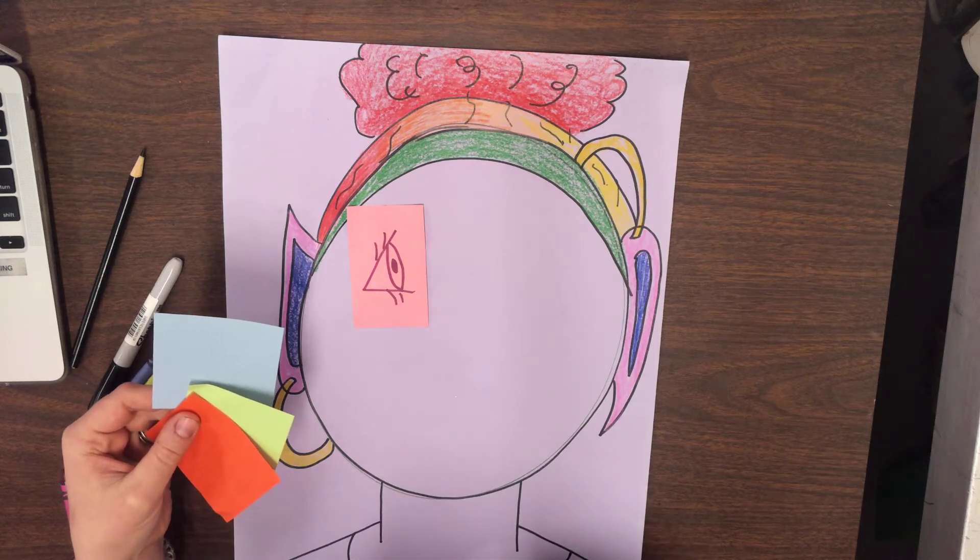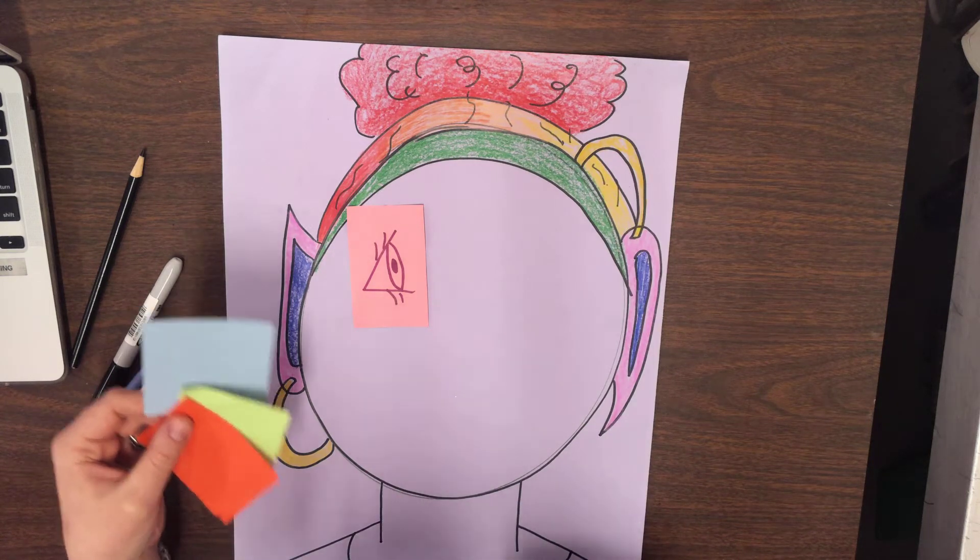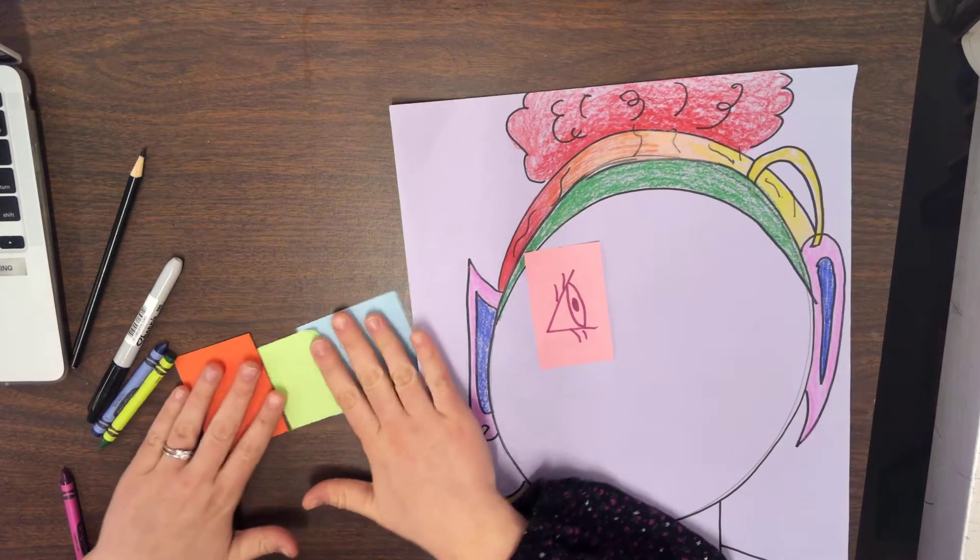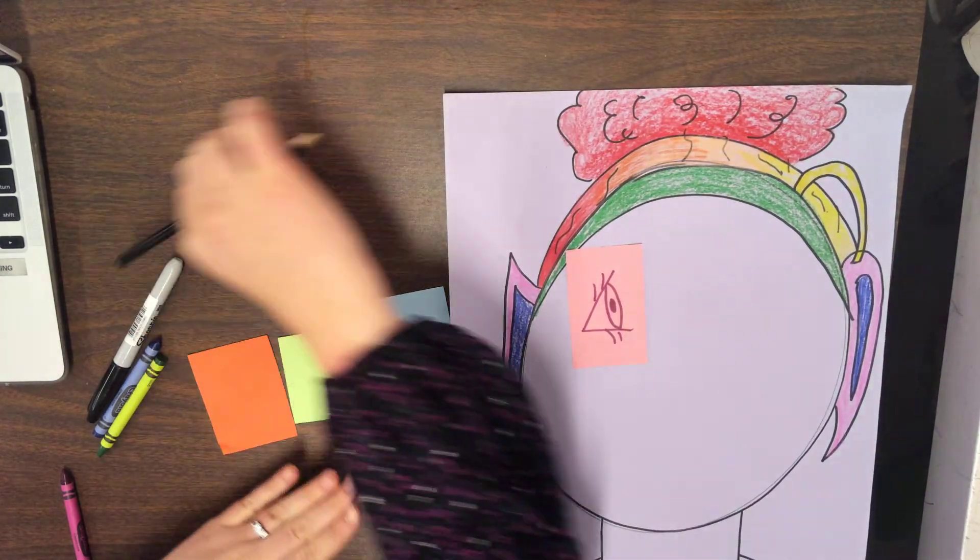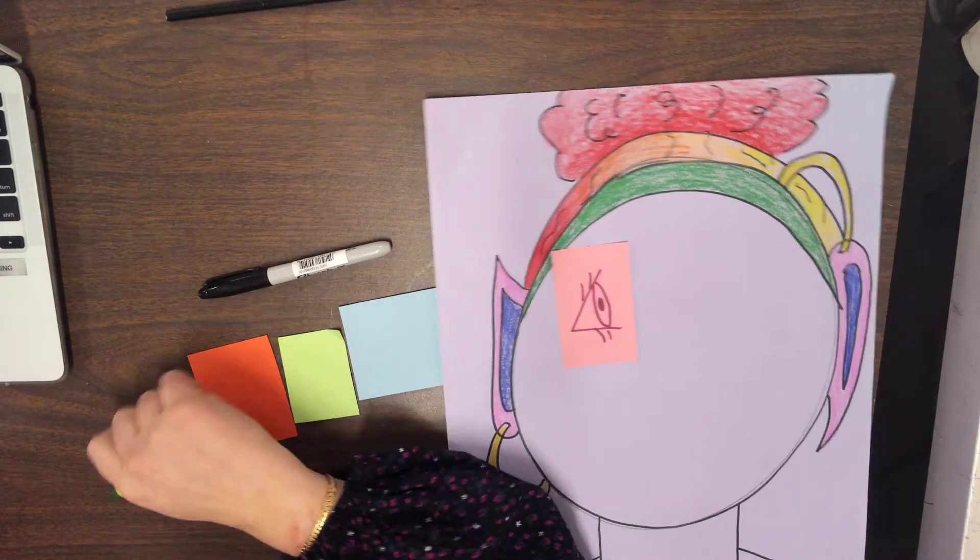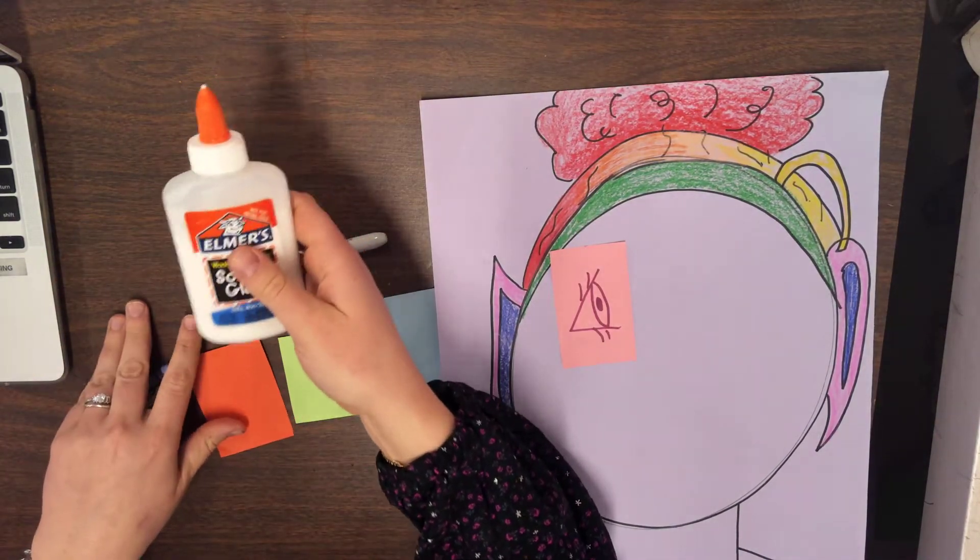Then you're going to go back to your seat. When your teacher says it's time, you can begin. The supplies you will need today are a pencil, a sharpie, crayons or colored pencils, and the last thing you will need is a glue bottle.